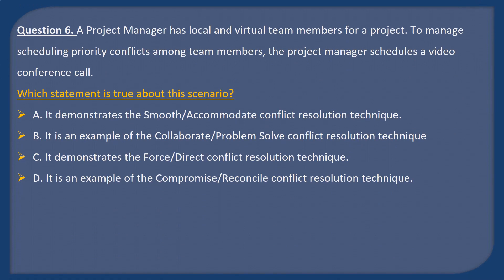Question 6. A project manager has local and virtual team members for a project. To manage scheduling priority conflicts among team members, the project manager schedules a video conference call. Which statement is true about this scenario? A: It demonstrates the smooth or accommodate conflict resolution technique. B: It is an example of the collaborate or problem solve conflict resolution technique. C: It demonstrates the force or direct conflict resolution technique. D: It is an example of the compromise or reconcile conflict resolution technique.